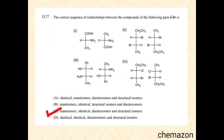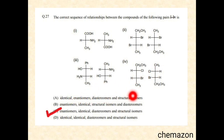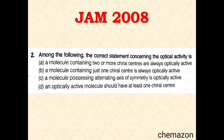So the correct answer is option C — enantiomers, identical, diastereomers, and structural isomers. Here is another question from the JAM 2008 paper.